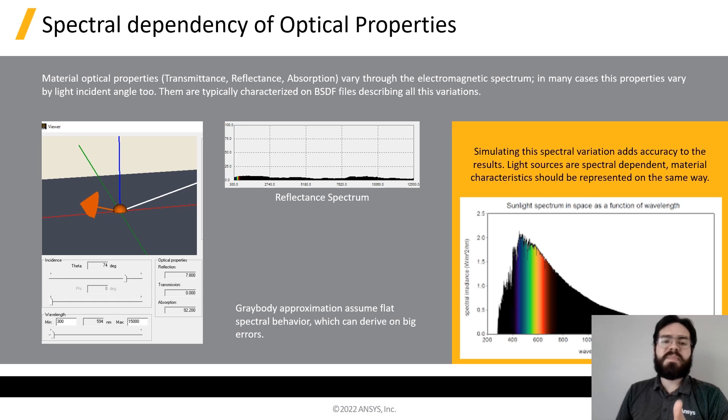Light itself also has a spectral dependency. Therefore, accounting for the spectral variation on the energy sources, as well as on the objects of study materials, is a key factor to achieve accuracy.